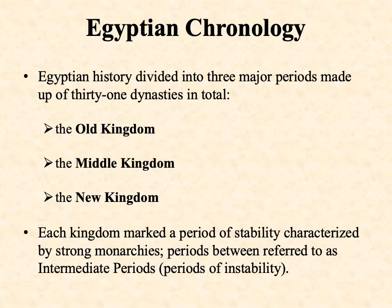When we talk about the history of ancient Egypt, we tend to divide it into three major periods collectively made up of 31 dynasties — 31 ruling families in total. These periods are the Old Kingdom, the Middle Kingdom, and the New Kingdom. This way of breaking down Egyptian history is actually borrowed from the ancient Egyptians themselves; by the time of the New Kingdom, Egyptians looking back at their own history broke it down exactly this way.